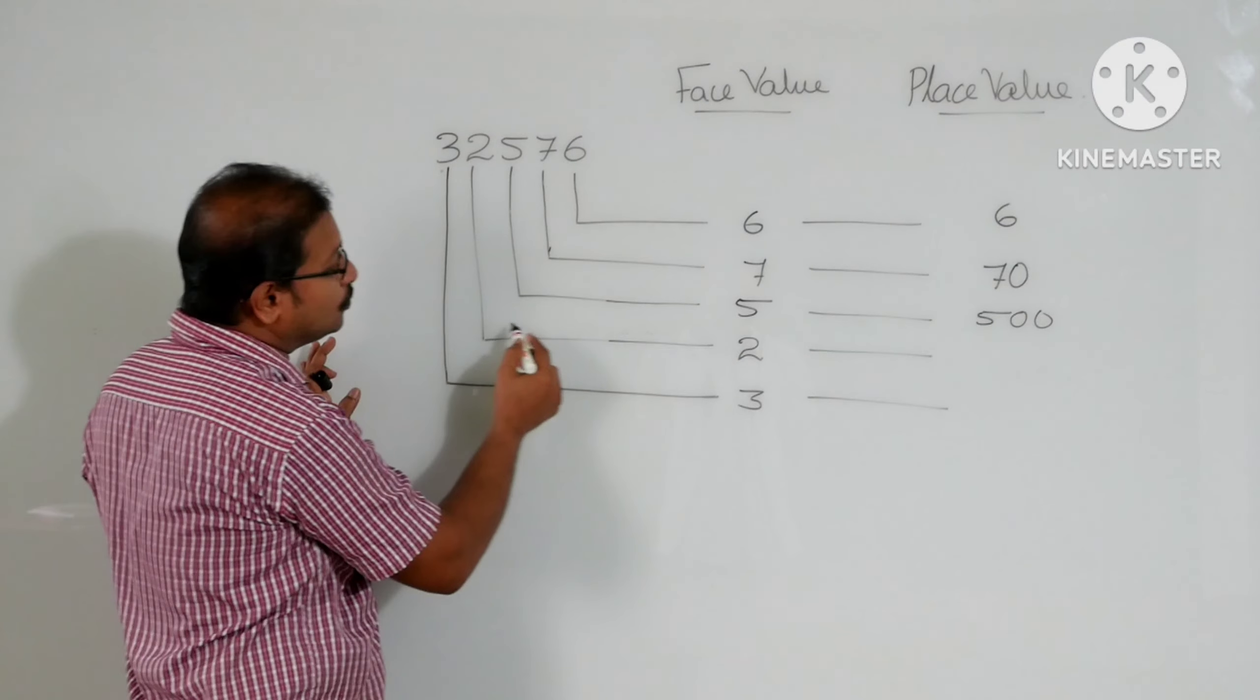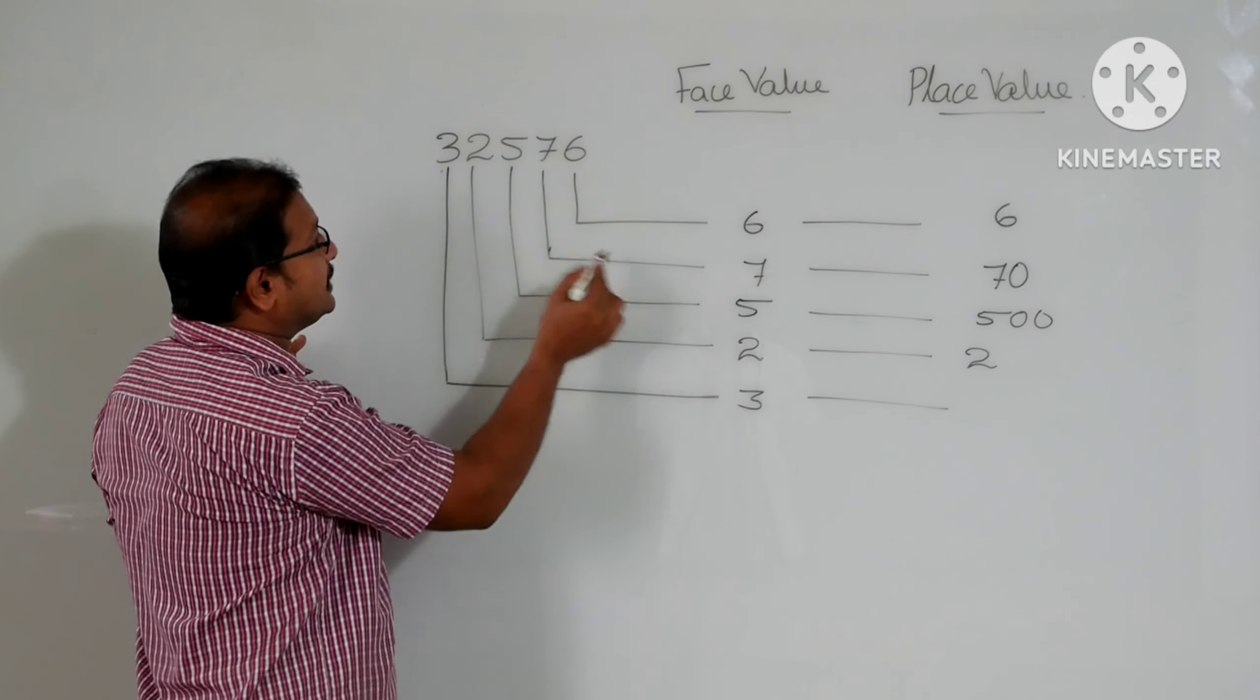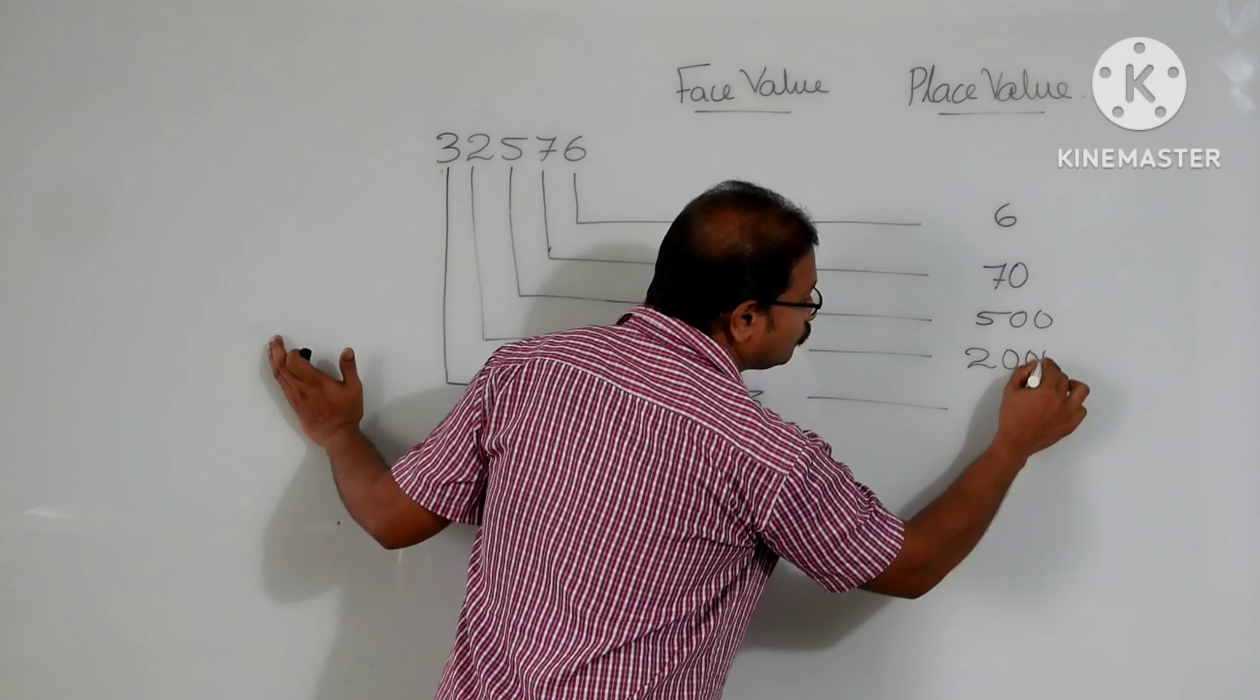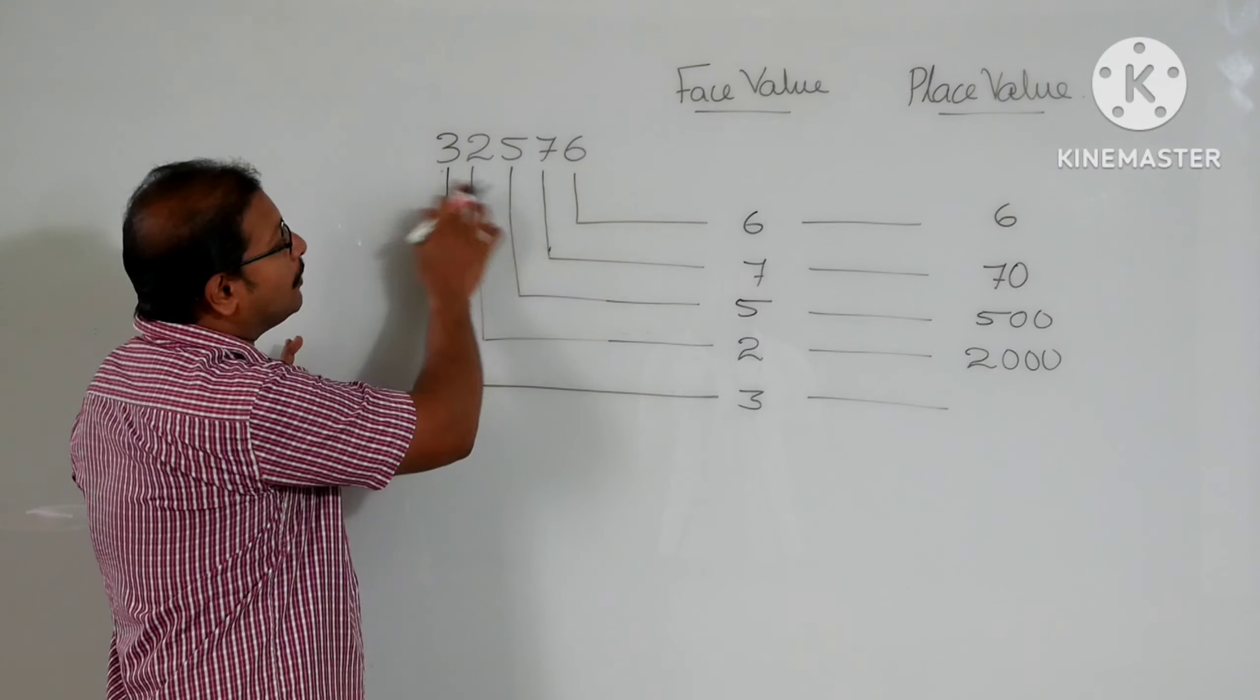Next one, 2. First we will write 2 for the place value. After that, we will count the digits. 1, 2, 3. That means 1, 2, 3. This is the place value of 2 from this number.